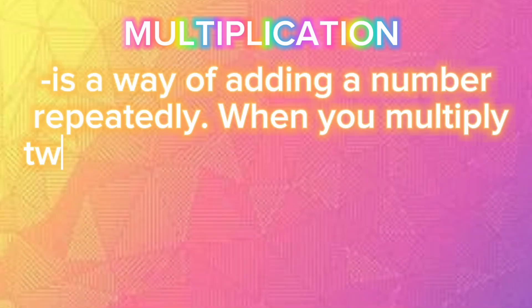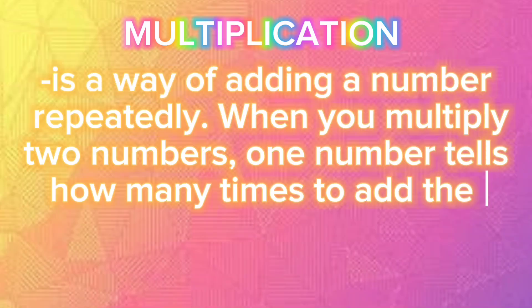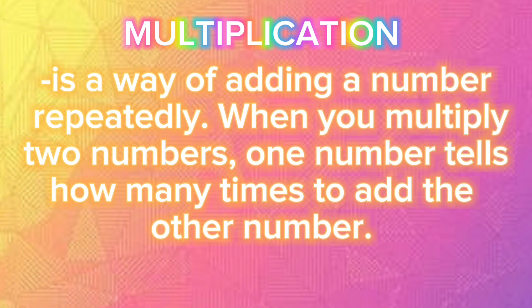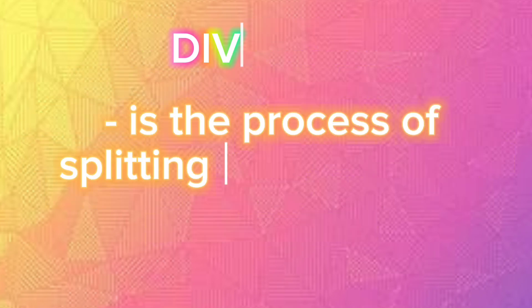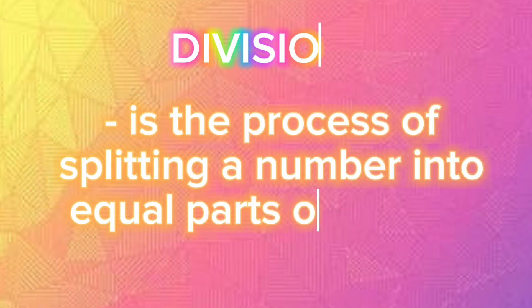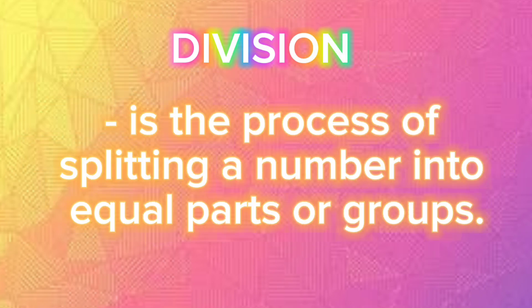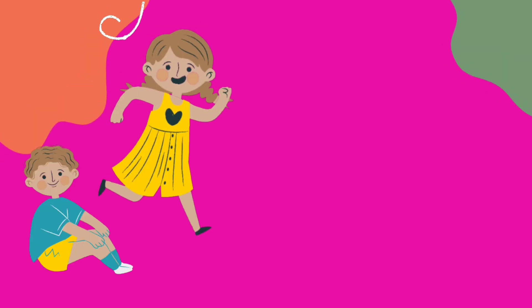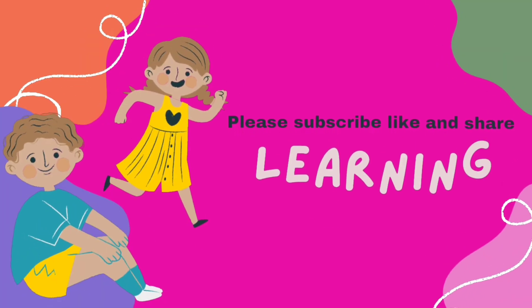Multiplication is a way of adding a number repeatedly. When you multiply two numbers, one number tells how many times to add the other number. Division is the process of splitting a number into equal parts or groups.